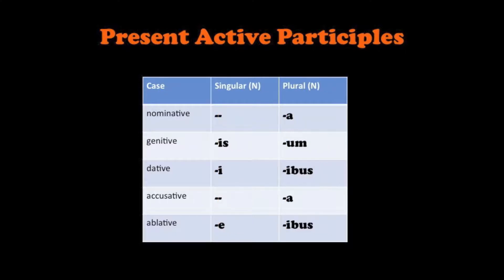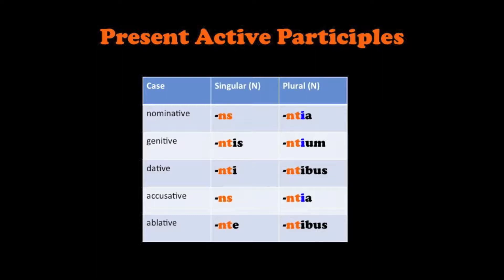Because a participle needs to act like an adjective, it can't only have male and female endings. The neuter endings are the third declension neuter: blank, IS, I, blank, E, AUM, EBUS, AEBUS. When we use these endings to form the present active participle neuter endings, we end up with NS, NTES, NTE, NS, NTE, NTEA, NTEUM, NTEBUS, NTEA, NTEBUS. Notice this time there are three extra I's in the nominative plural, the genitive plural, and the accusative plural. Also note that both blanks — the nominative singular and accusative singular — are replaced with NS.